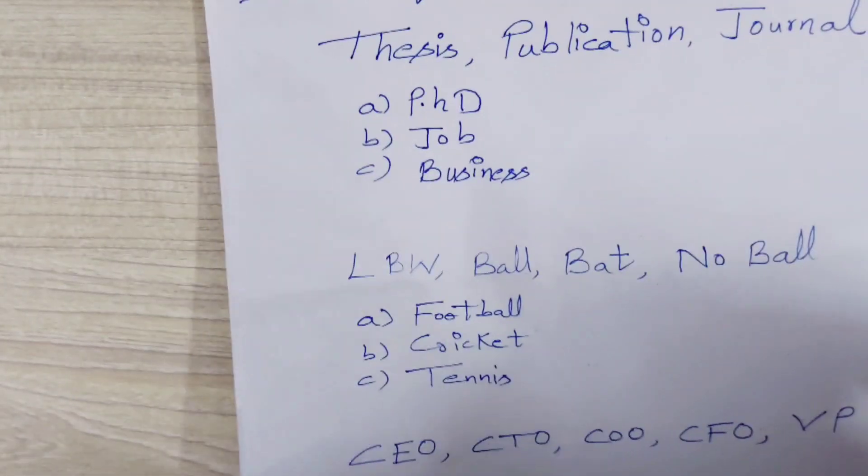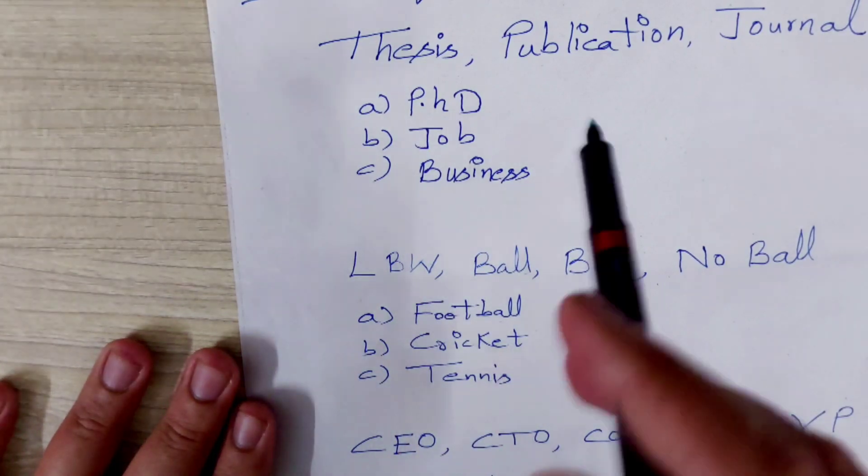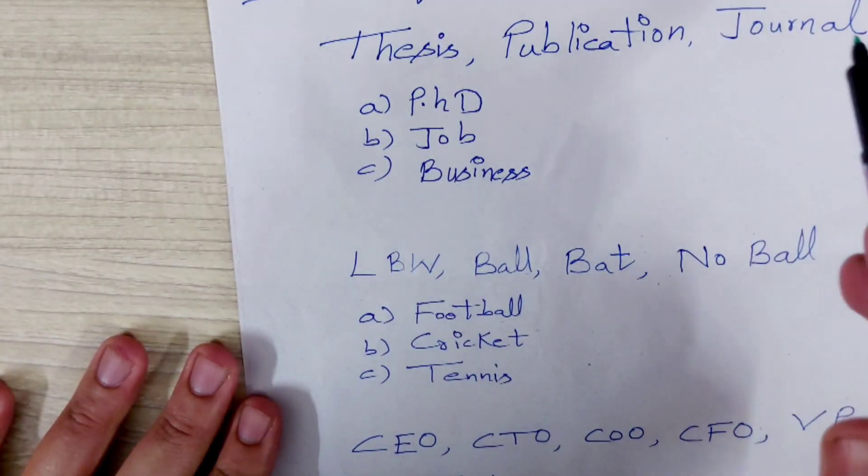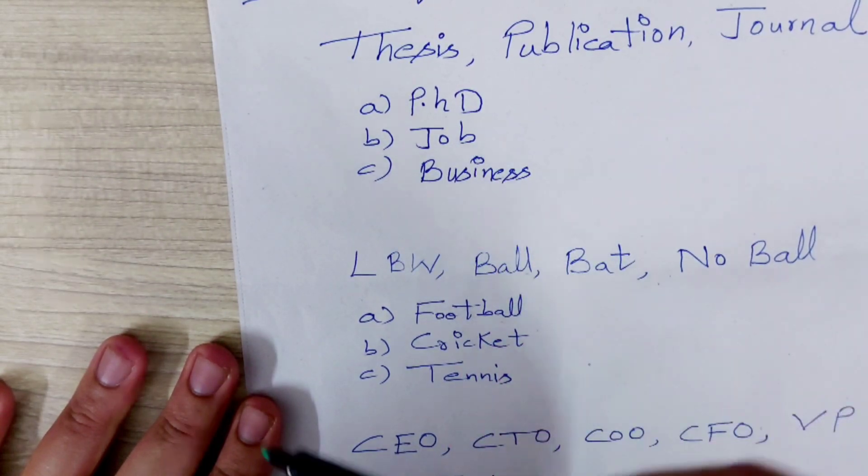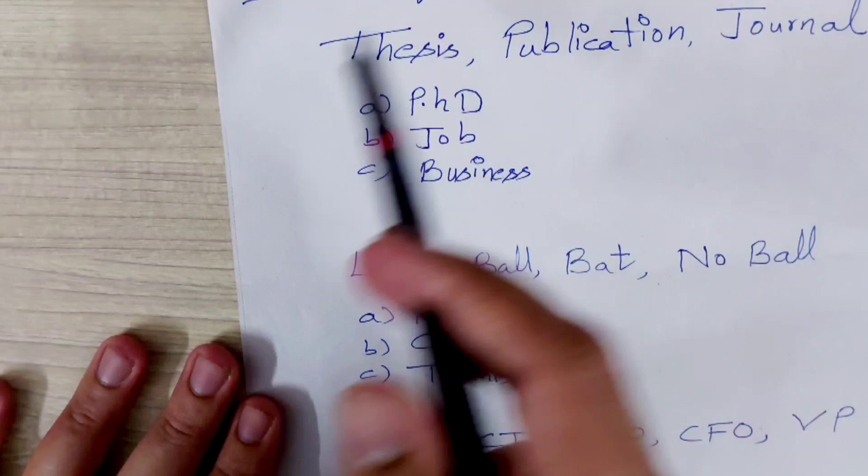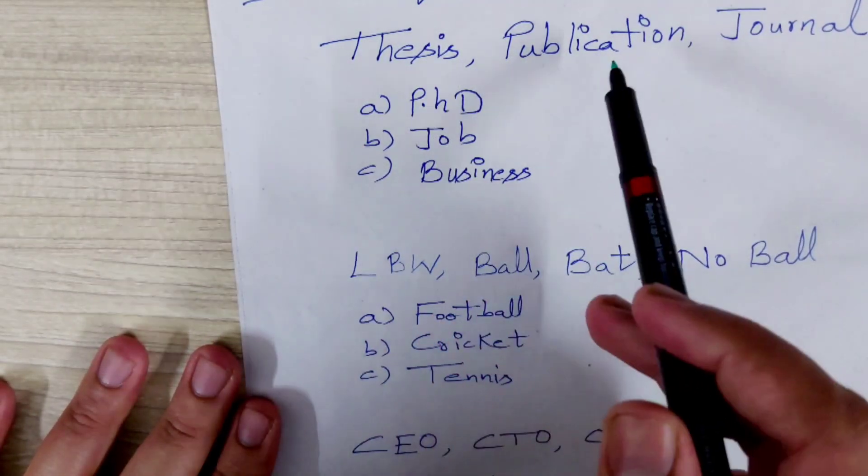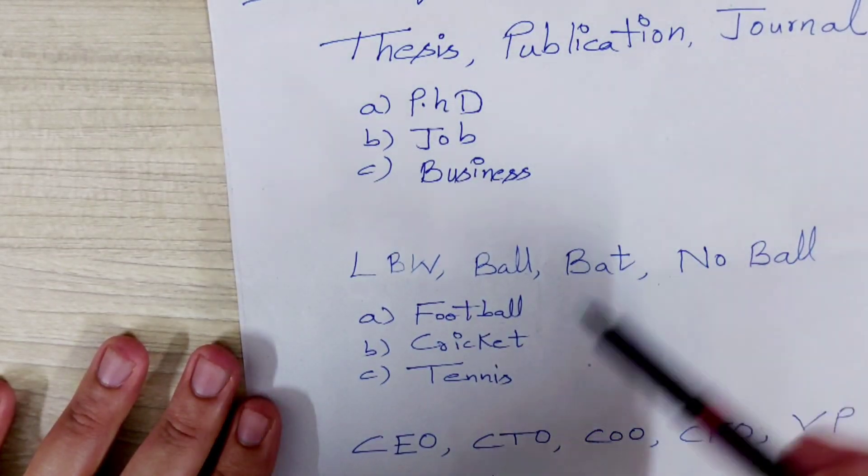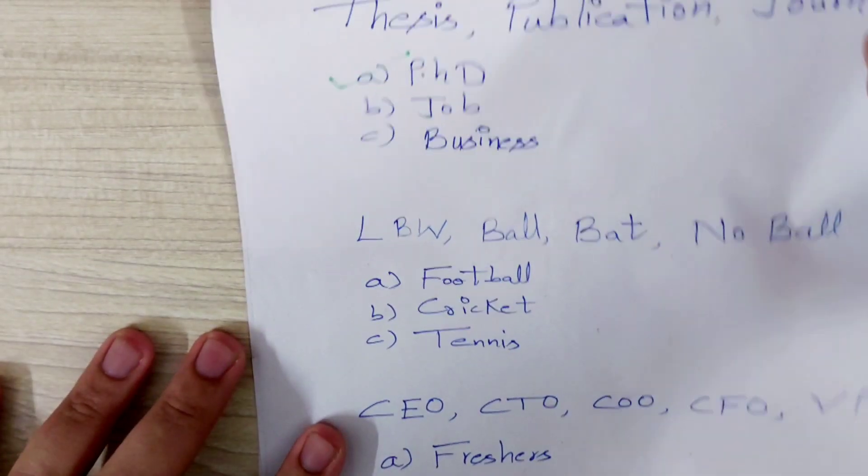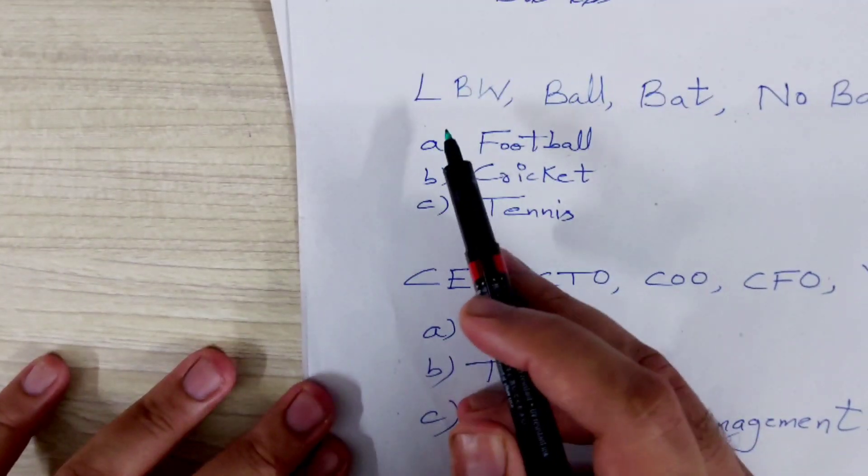Let's move to the next page of the English test. Now definition. Guys, it would be like three words would be given to you. Like thesis, publication, journal, and three options. So you have to select the most appropriate option regarding these three words. So thesis, publication, journal. Everyone knows. PhD.